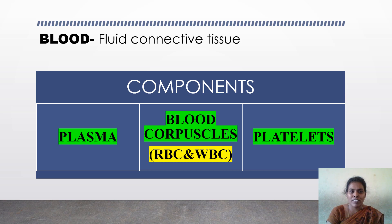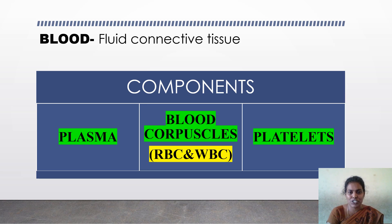The first important component of the circulatory system is blood. Blood is red in color due to the presence of a red pigment called hemoglobin. Blood is also called fluid connective tissue — it is in liquid state (fluid), it connects all parts of the body (connective), and it consists of millions of cells (tissue). Blood connects every part of the body.